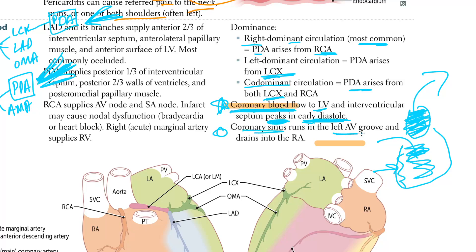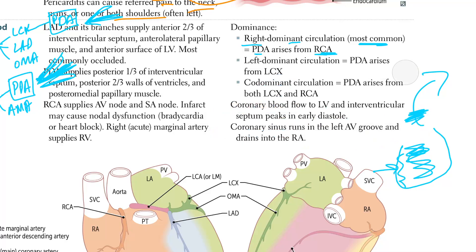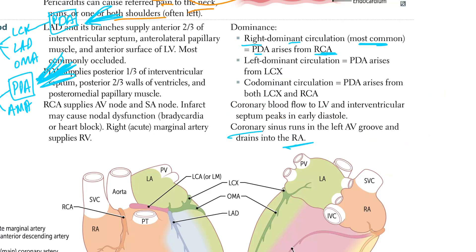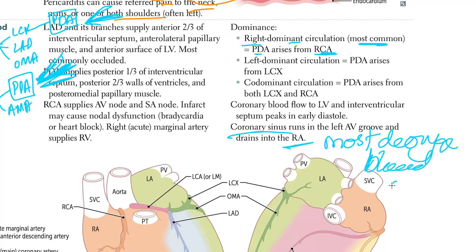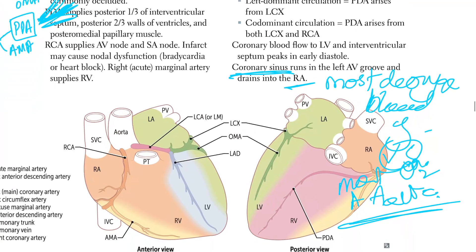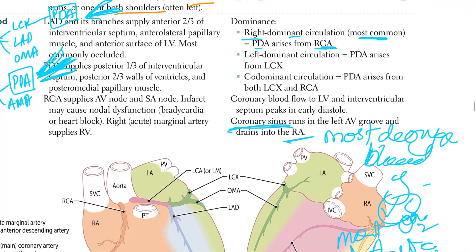The coronary sinus runs in the left atrial groove — high yield — and drains into the right atrium. The coronary sinus contains the most deoxygenated blood in the body. Conversely, the most oxygenated blood is present in the ascending aorta.